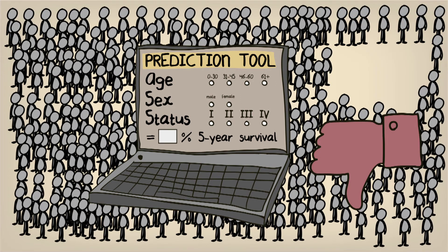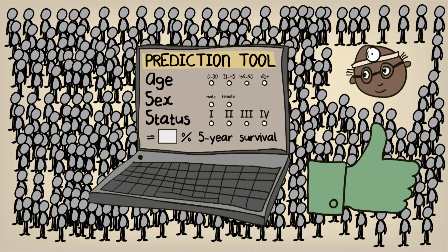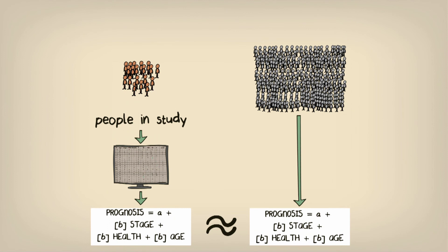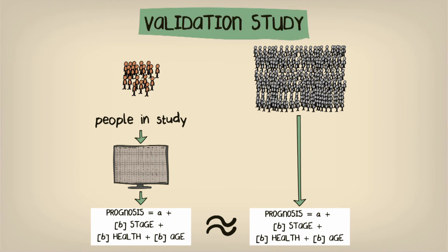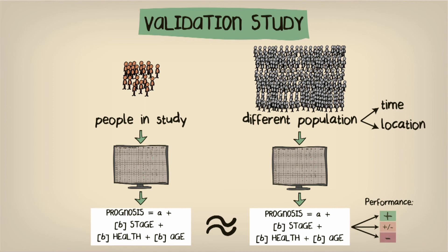If you want your fellow clinicians to trust in your research and apply it in new patients, you need to convince them that your prediction rule can be accurate in new populations. The recommended way of doing this is to perform what is called a validation study. This generally involves collecting data in the same way as you did for your first study, but from a different group of people, different in time or geographical location. You can then test your prediction rule in new patients to see how well it performs and whether it still seems good enough for use in clinical practice.